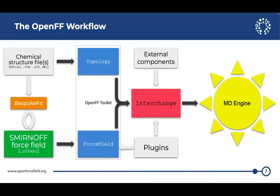Then you can combine that topology with a force field to get an interchange. The Smirnoff force field specifies everything — your cutoffs, so you don't need to worry about setting them correctly; that's already specified in a Smirnoff force field. How to apply the parameters, the PME settings, whether constraints are used — it's all defined in the force field. Our force field format is more extensible than other formats, and it's easier to debug problems with Smirnoff force fields without getting tangled up in atom type relationships.